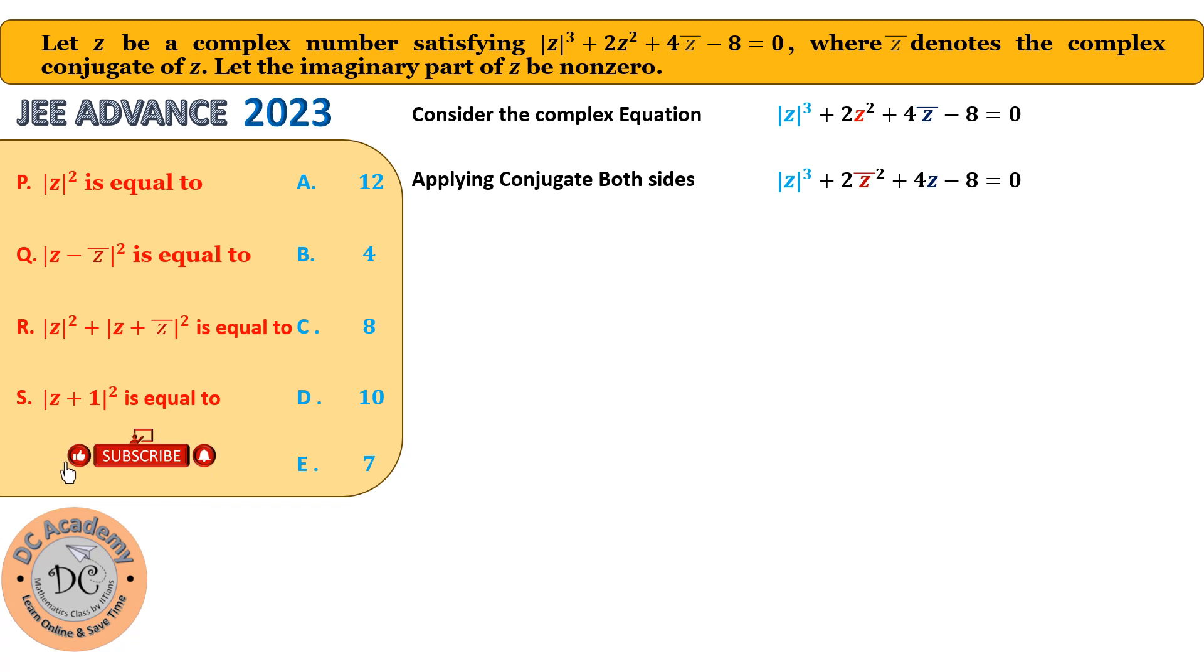Now we subtract both. If I subtract both, it will be 2(z² - z̄²) + 4(z̄ - z) = 0. So therefore, just rearranging that basic arithmetic calculation, we get that z² - z̄² = 4(z - z̄). Now, if we factorize it and cancel out the 2 and also z - z̄ from both sides, we can simplify that relation.